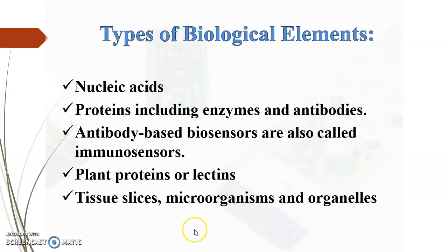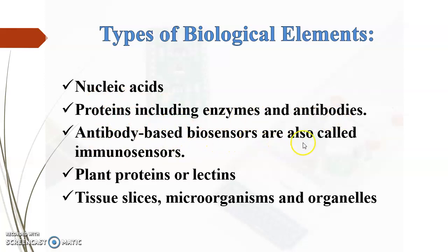These are the biological elements which could be detected qualitatively or quantitatively: nucleic acids, proteins including enzymes and antibodies. Antibody-based biosensors are also called immunosensors. Other detectable elements include plant proteins and lectins, tissue slices, microorganisms, and organelles.